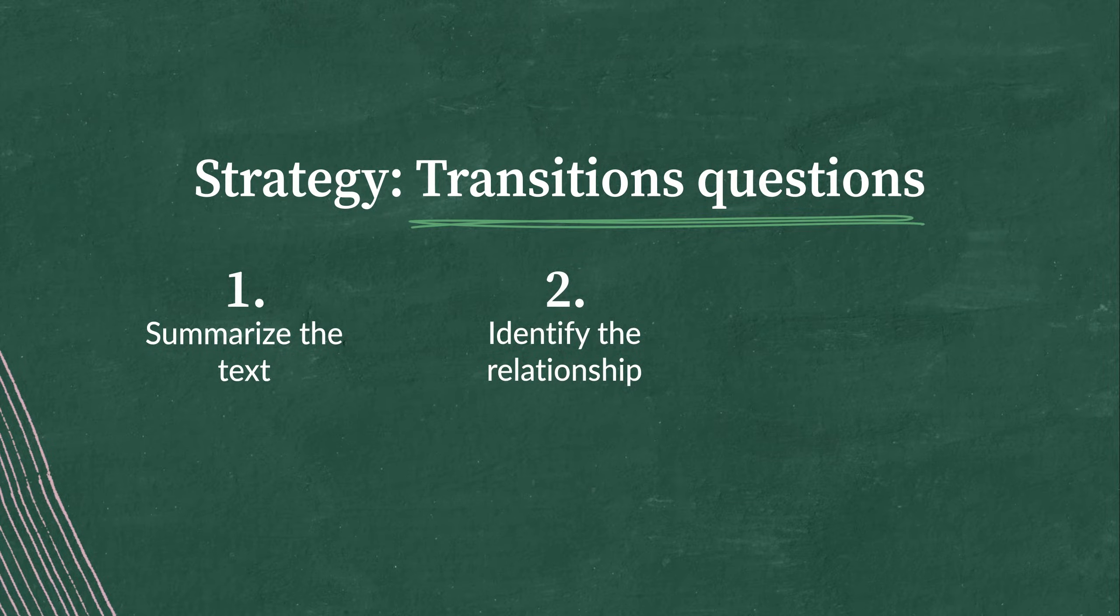Are they agreeing? Does one idea cause the other as an effect? Once we've decided which category of transition we're looking for, we can move on to step three, choosing a transition that matches the relationship between the ideas.